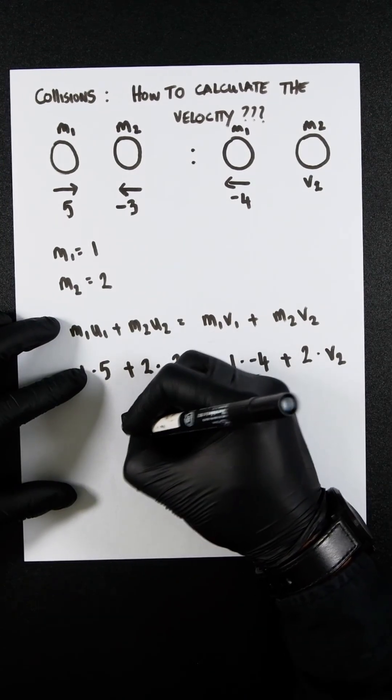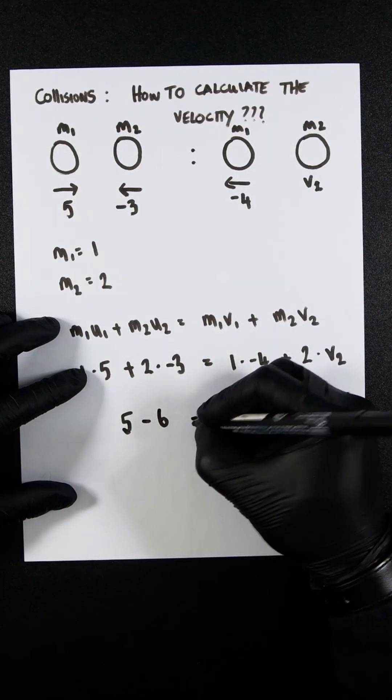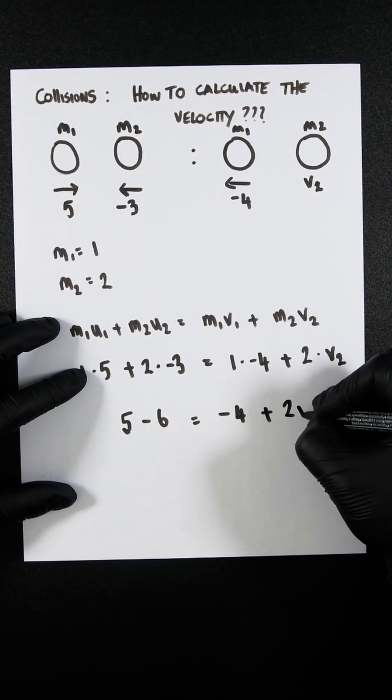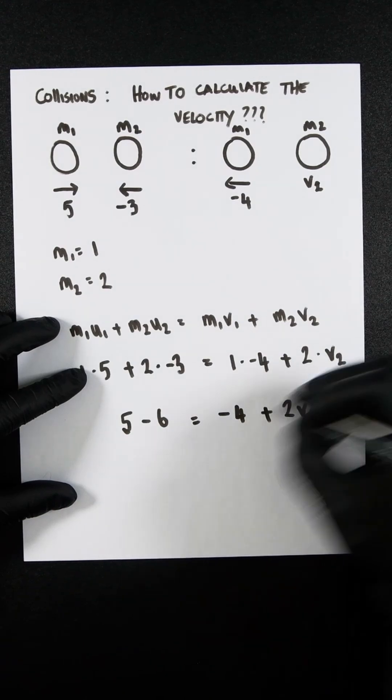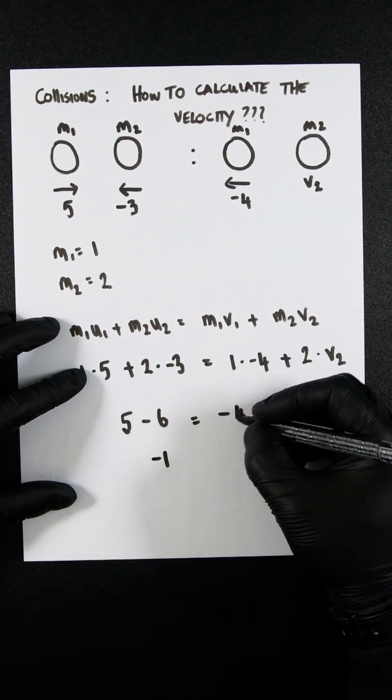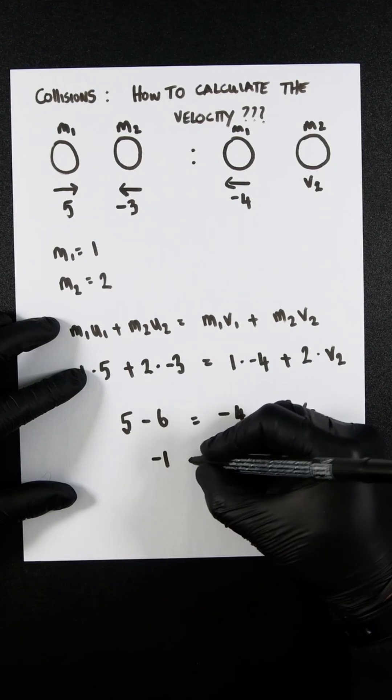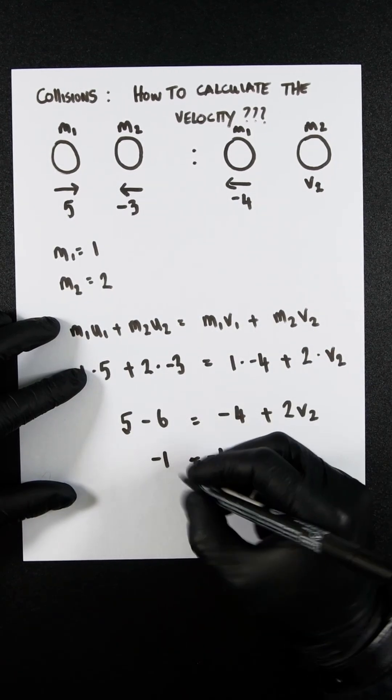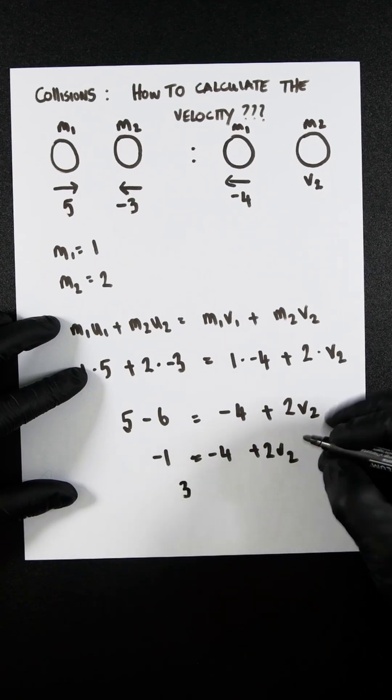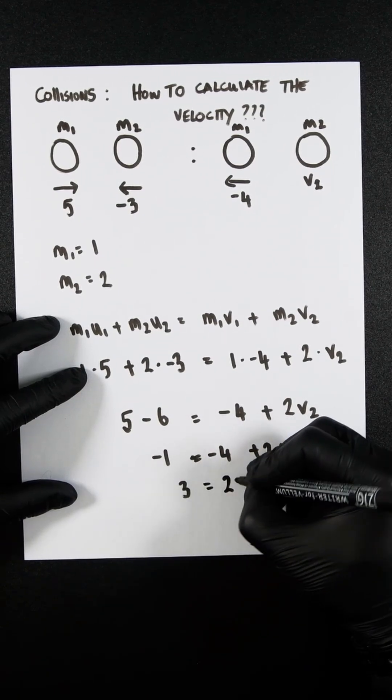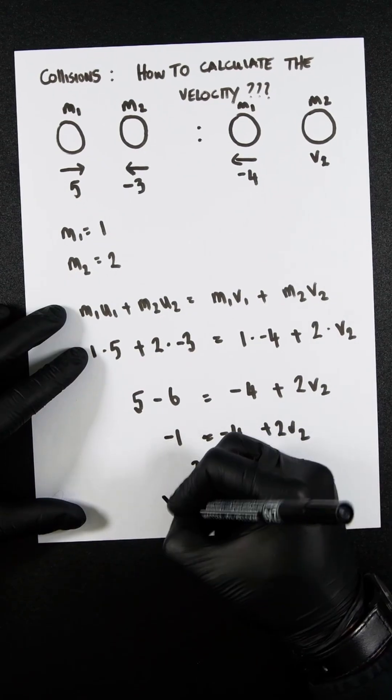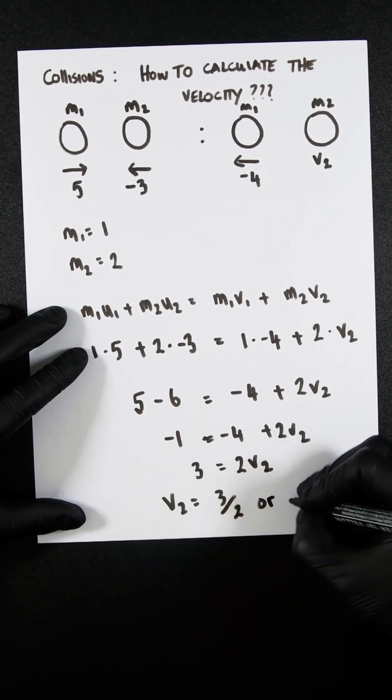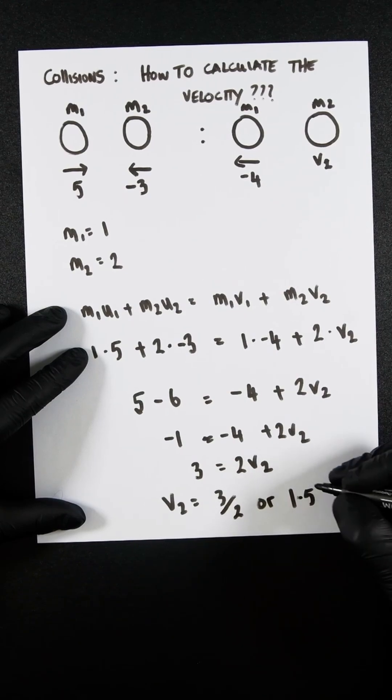So you're going to have 5 minus 6 equals minus 4 plus 2V2. So you're going to get minus 1 on this side equals minus 4 plus 2V2. Let's add 4 to both sides. So you're going to get 3 equals 2V2, and that means V2 is going to be 3 over 2, or 1.5.